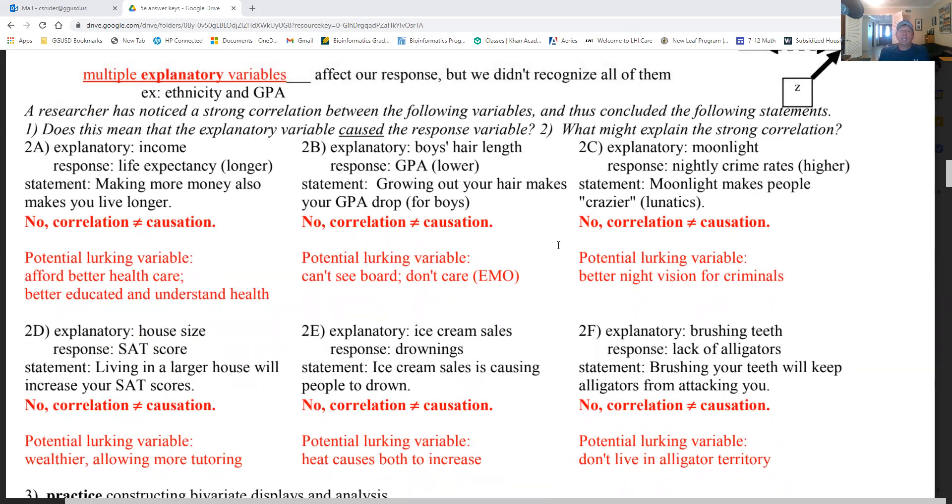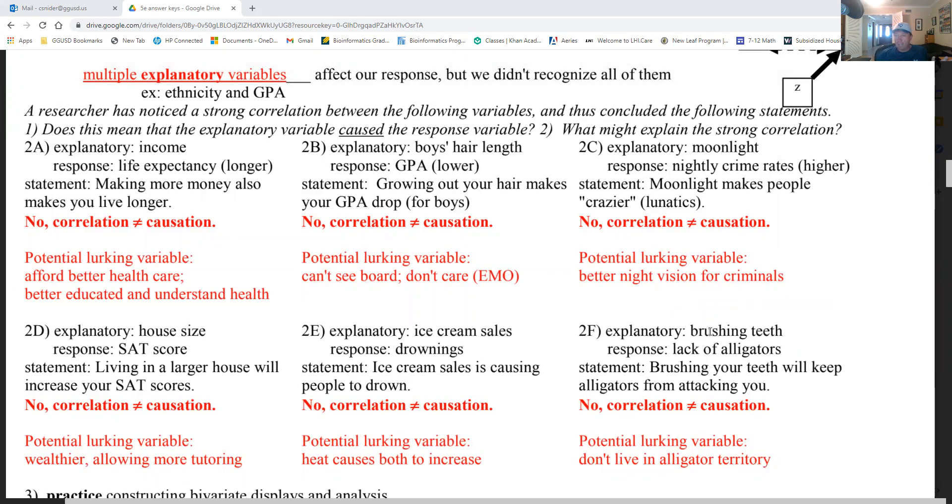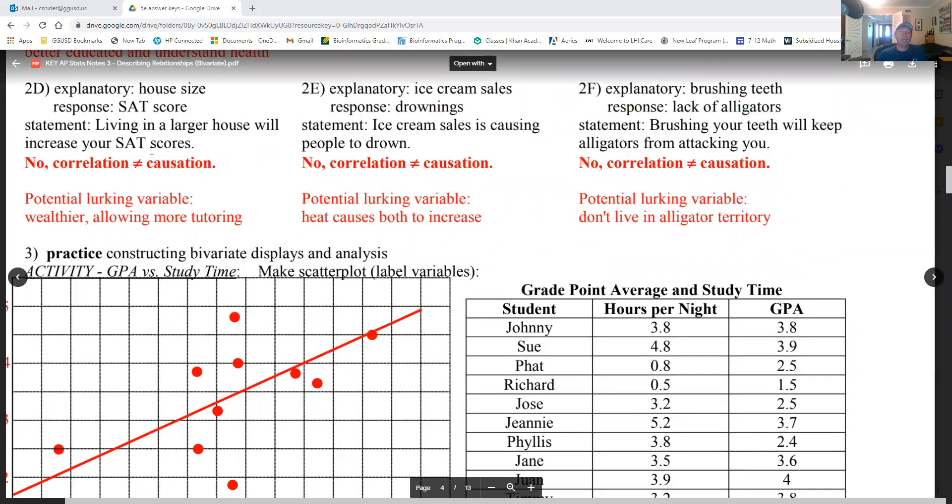Two: boys' hair length and lower GPA. Growing out your hair makes your GPA drop for boys? No, that's not causation, that's correlation. Potential lurking variable: I don't know, you can't see the board, you don't care. I mean, there's all kinds of variables there. It may just be random. It's nothing there. C: explanatory variable moonlight, response is night crimes. By the way, that is true: when there's moonlight, there's more crimes. And the statement 'moonlight makes you a little crazier' - no, it's just not. It's correlation, not causation. Potential lurking variables: there's better vision for criminals at night. That's actually what it is. House size and SAT scores: I mentioned this before. Living in a larger house will increase your SAT score? No, that's not causation, that's correlation. The wealthier get more tutoring, you guys know that.